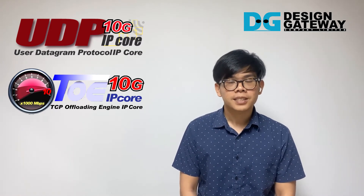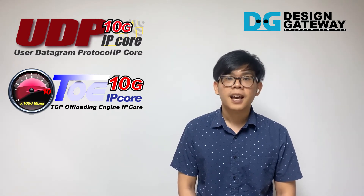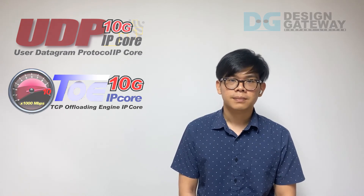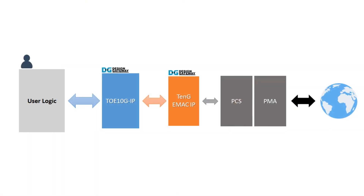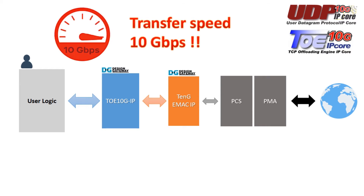Let's see what the low latency network IP is and what's the difference between standard network IP and the low latency network IP. This is a block diagram for our network IP. Generally, our network IP such as TOE IP or UDP IP focuses on transfer speed, achieving a maximum of 10 gigabit per second. But in some applications such as FinTech, speed is less critical — the most important point is latency.